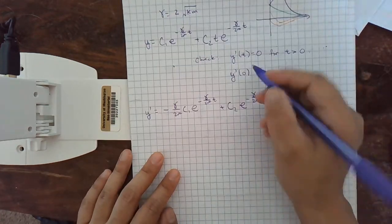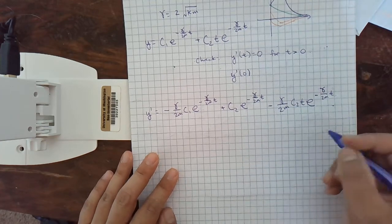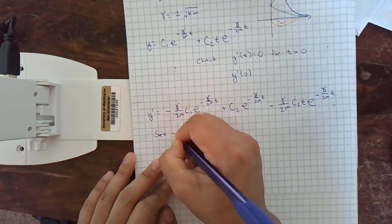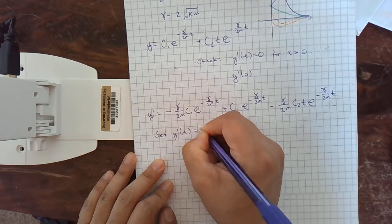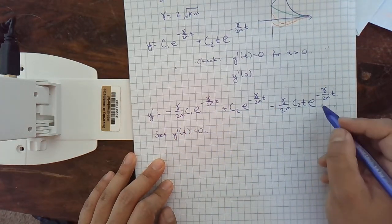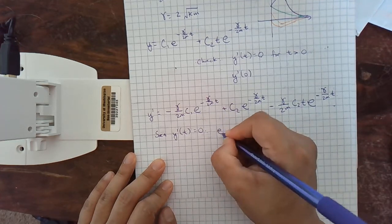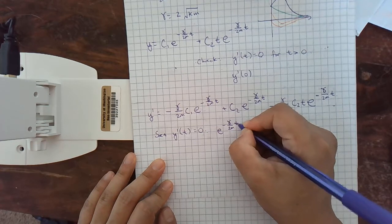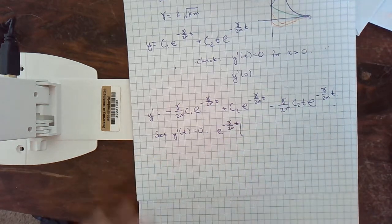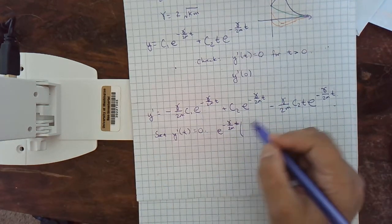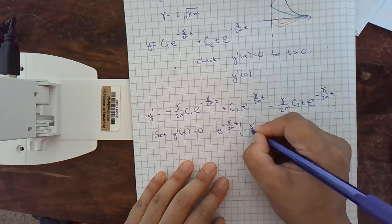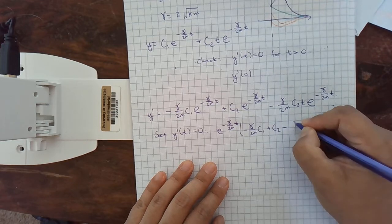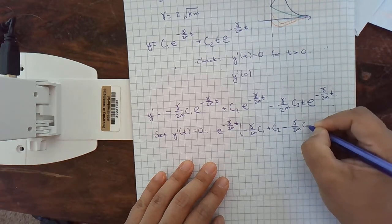And then we wanted to set it to 0. So, set y prime t equal to 0. Then what happens? Well, we can factor out an e to the negative gamma over 2m t. And that part is never 0 because it's e to some power. That's the theme of this course. So, then this other thing must be 0. Negative gamma over 2m c1 plus c2 minus gamma over 2m c2 t.